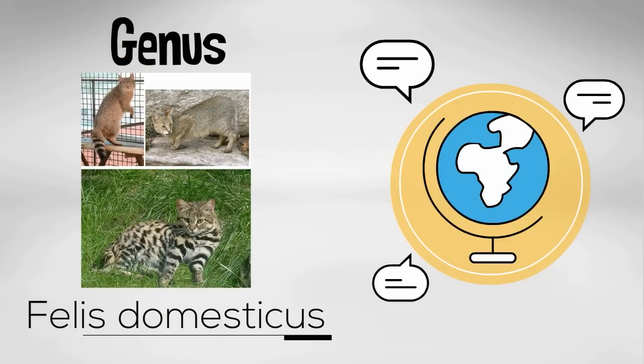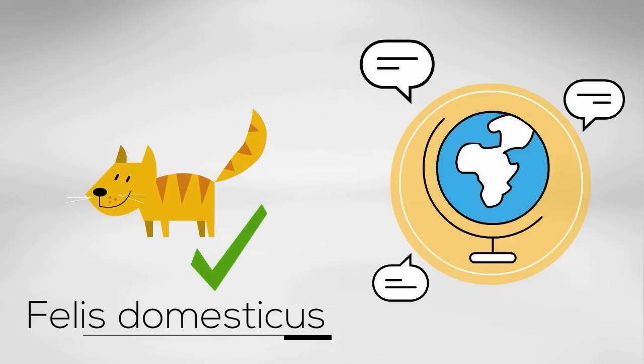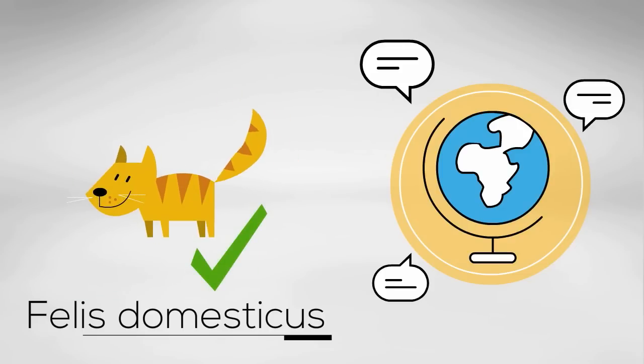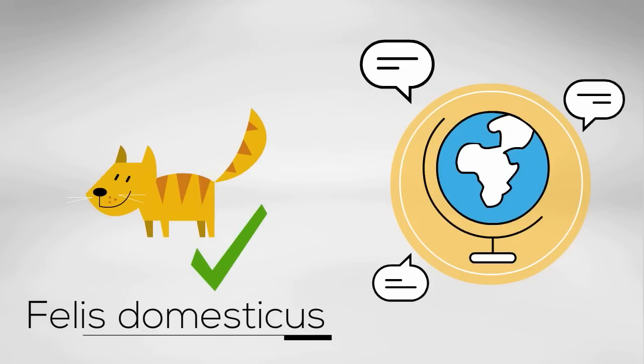The second part of the scientific name, domesticus, is always lower case and it describes the species that is unique to the organism.